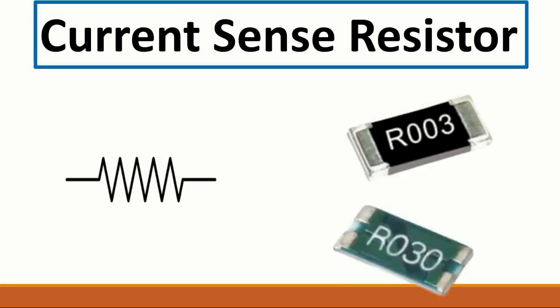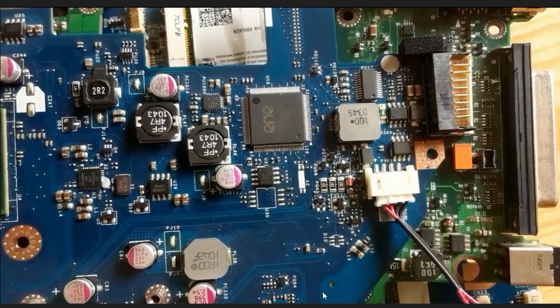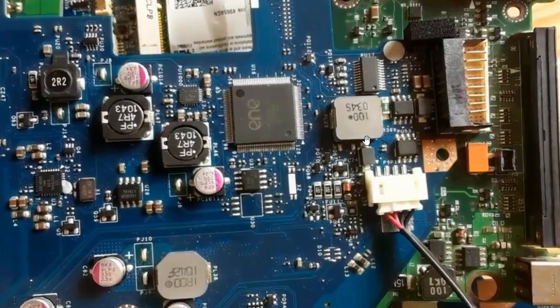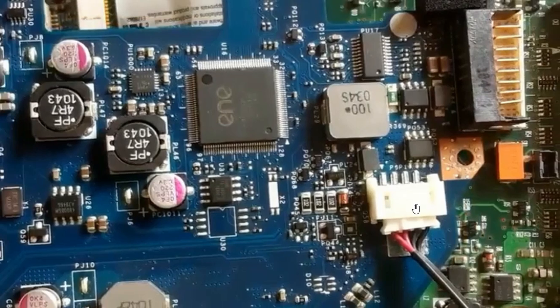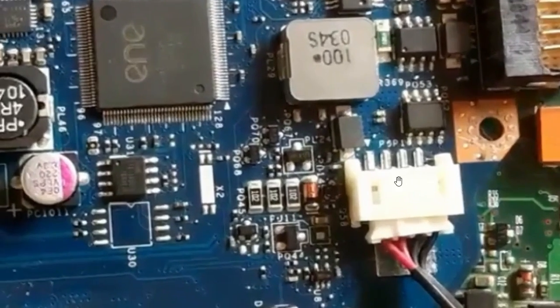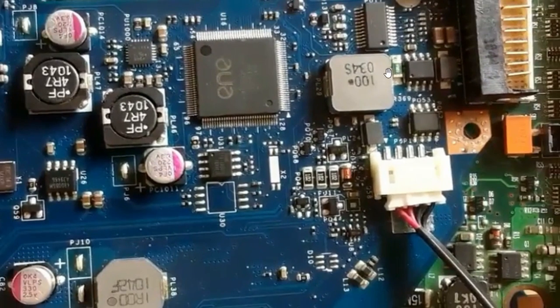Then we have the current sense resistors. These sense whether the current is okay or not. We find this kind of resistor at the beginning of any circuit, especially in the charge circuit, 3-volt, 5-volt circuits. Its resistance is about zero to two ohms. On the motherboard, here we have current sense resistors — near the power jack and switches.